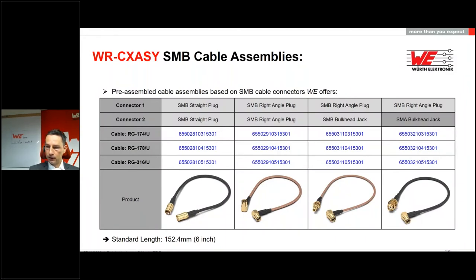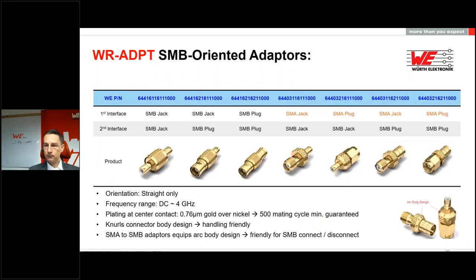For cable assemblies, the types available depending on frequency range are RG174, RG78, and RG316, covering different positions in the frequency range — which we will see in more detail later. Adapters are available not only for SMB to SMB but also as cross-type options to SMA.